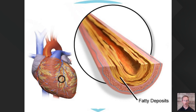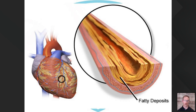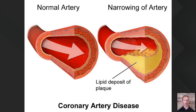The body recognizes this damage and scars it over — layer on top of layer on top of layer of scarring. Then it lays down calcium over these fatty deposits. The section inside an artery is called the lumen, and the lumen progressively gets more and more narrow over time, restricting blood flow and leading to high blood pressure and coronary artery disease, because the arteries become hard and inflexible from so much calcium and fatty deposit buildup.